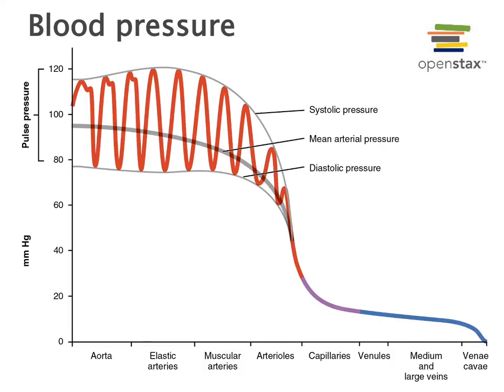Every time the heart ejects blood, there is an increase in arterial blood pressure — from the lowest value of blood pressure in an artery to the highest value. The lowest value is called diastolic pressure and the highest value is called systolic pressure. The difference between systolic and diastolic is known as the pulse pressure — the pulse you can feel if you place your finger on an artery and feel the expansion of an artery with each heartbeat.